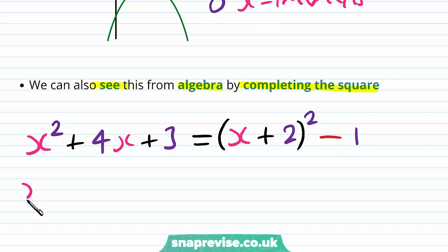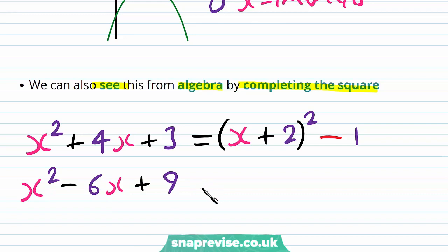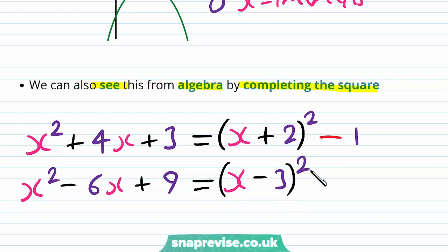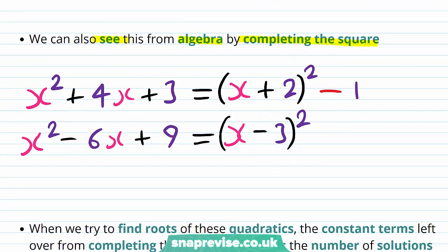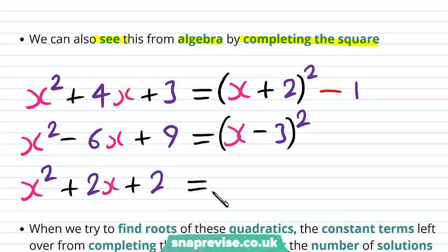Similarly, if we have x-squared minus 6x plus 9 and we complete the square again, we're going to get x minus 3 all squared from half of the middle term. But this time our constant is zero. Lastly, if we have x-squared plus 2x plus 2, this gives us x plus 1 all squared, and we have a plus 1 on the end.